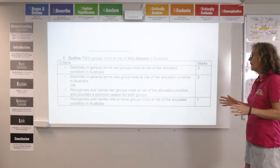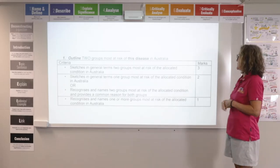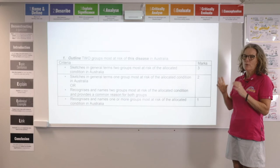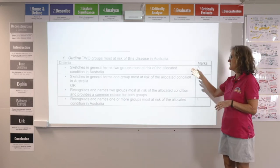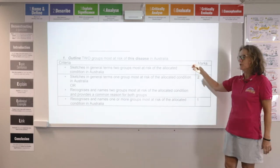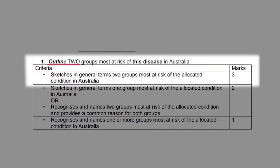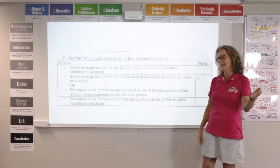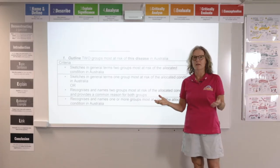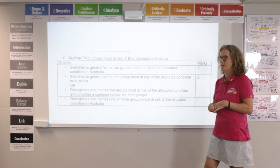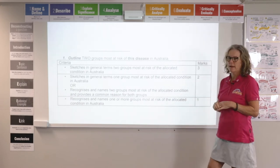We're having a quick look at each of those three questions. What I really want to draw your attention to is the difference between getting the top mark and getting the next mark down. In the top mark it's only an outline — a sketch in general terms. You must do the two groups; if you don't, you won't get the three marks. You must link that group to the condition — you can't just say this is a condition they get. Explain why they're more at risk of that condition. Not too much depth, but it must have that link.